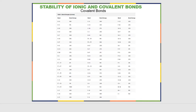In the previous sections we talked about the Lewis structures of covalent and ionic compounds. In this section we want to look at the stability of ionic and covalent bonds. Just like we looked at the Lewis structures for covalent and ionic compounds separately, we're going to look at the stability of ionic and covalent bonds separately, starting with covalent bonds.